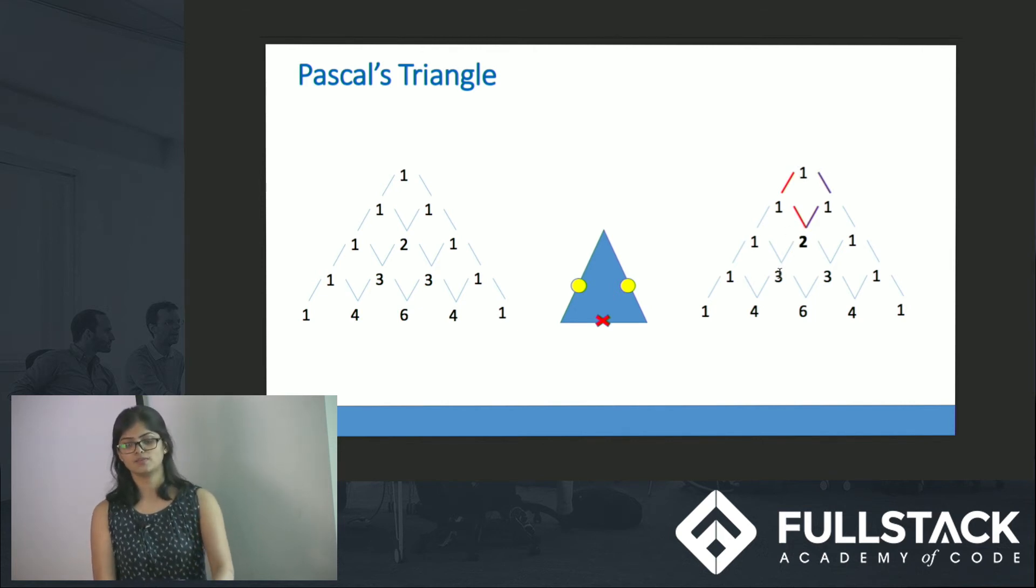Likewise, if I have to walk here there are three paths: one, this is 2 and this is 3. So what am I doing here? In order to compute a value at a particular location I am actually adding the two previous values that I have already computed.